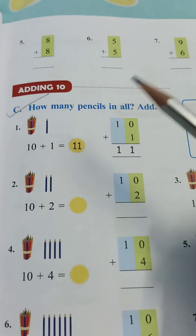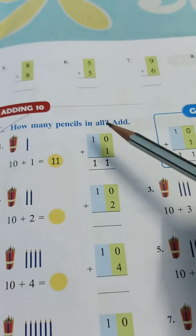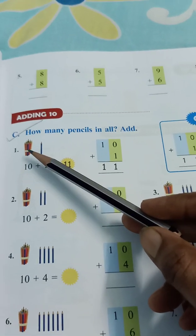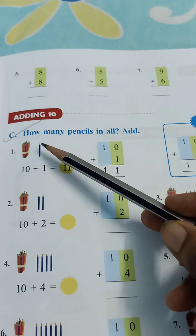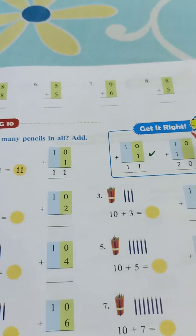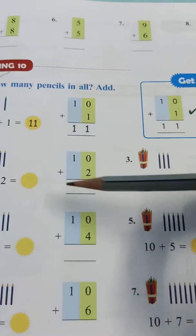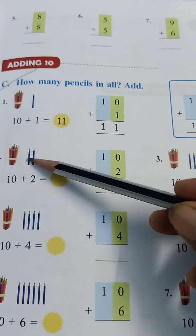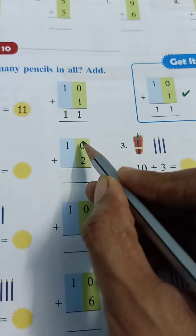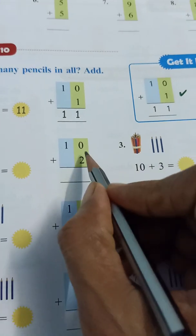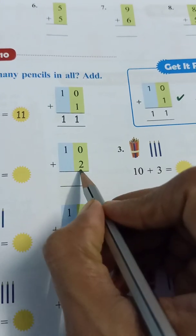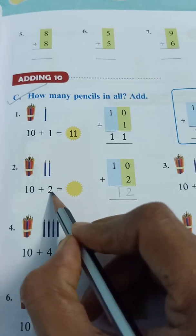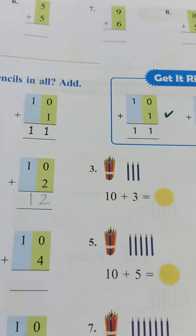Now coming down, C part. How many pencils in all? Add. Here 10 plus 1. This is a bundle of 10 plus 1, that is equal to 11. In the same way, 10 plus 2. After 10, 11, 12. So if we will add vertically, then there is no number. 2 will come here, and 1. Total 12. 10 plus 2, 12. The rest you practice children.